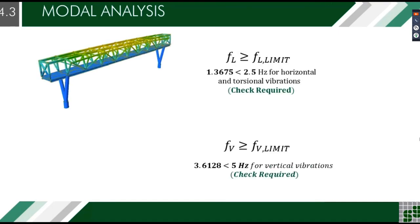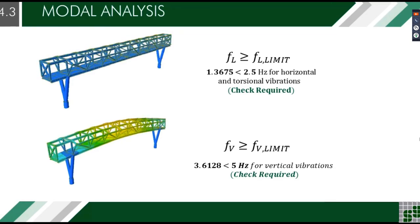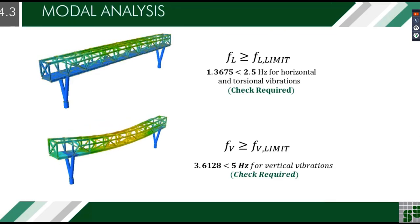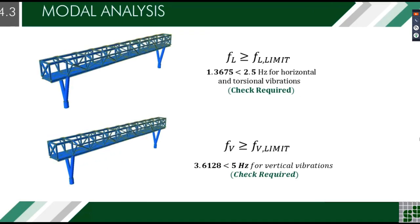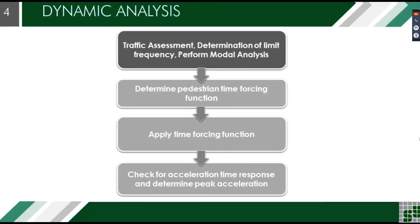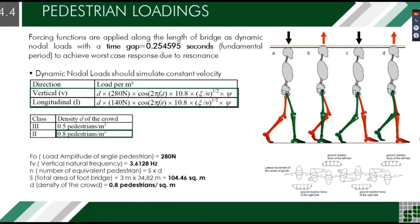Since the horizontal and vertical vibration frequencies are less than the required limits, we need to check the acceleration of the bridge due to pedestrian loadings. To do this, we need to determine the pedestrian time forcing function. As you can see, the pedestrian loading is simplified as a Fourier series of component sine waves. The amplitude of each harmonic component is proportional to the walker's body weight and accounts for the dynamic effect. These are the following data used in the project.